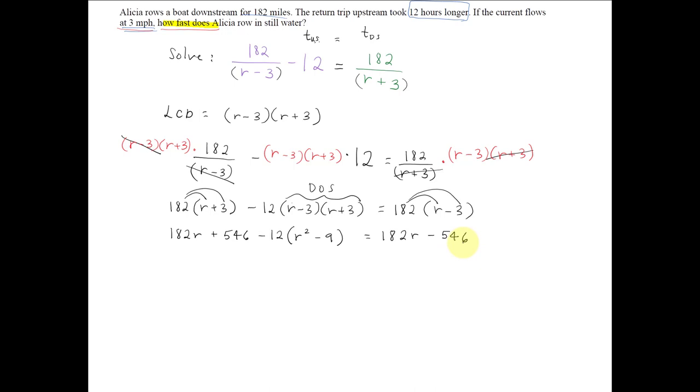We're not quite done, we still have to distribute that 12 into that difference of 2 squares. So we get 182r plus 546 minus 12r squared plus 108 equal to 182r minus 546.